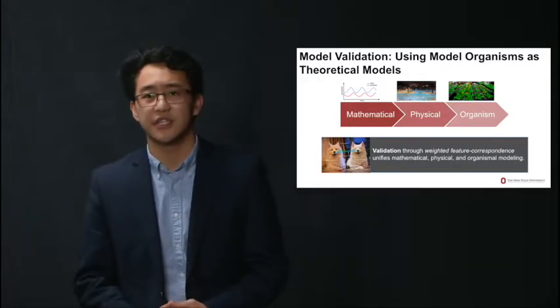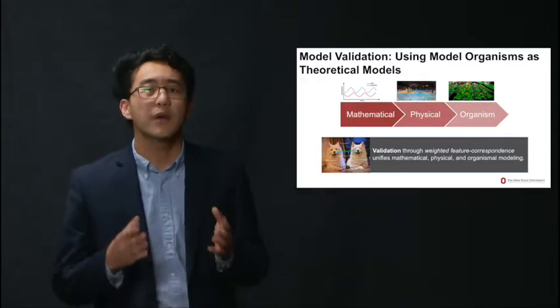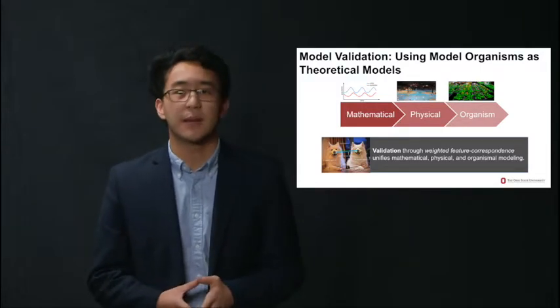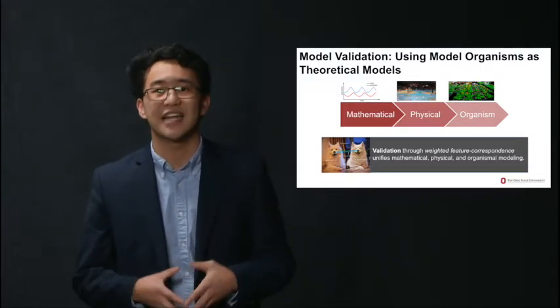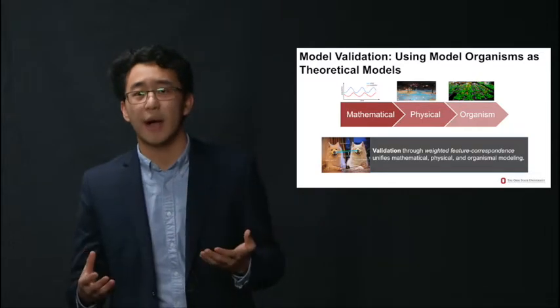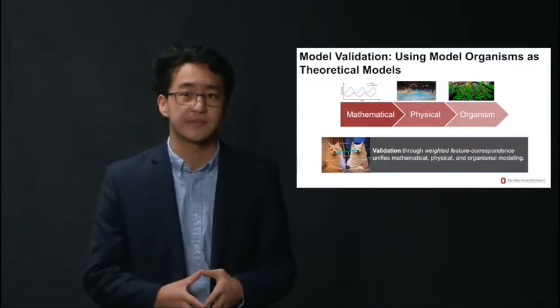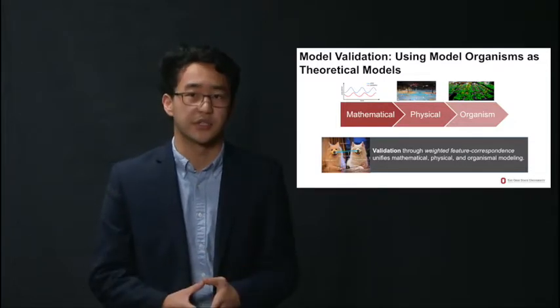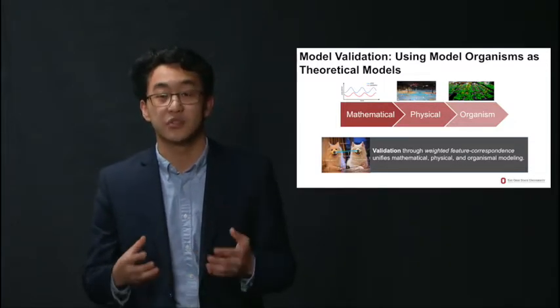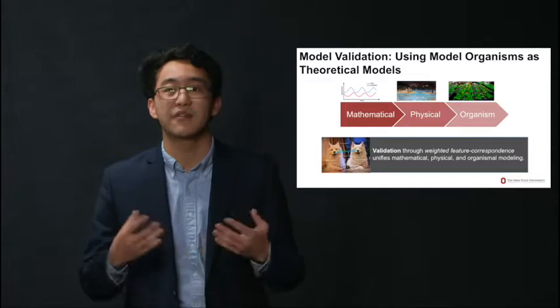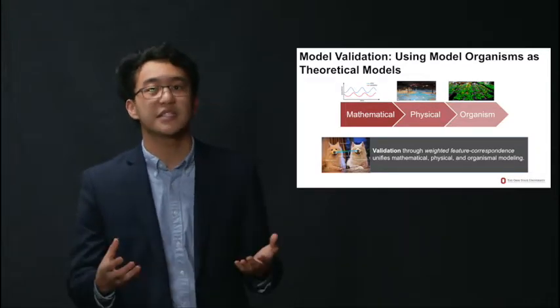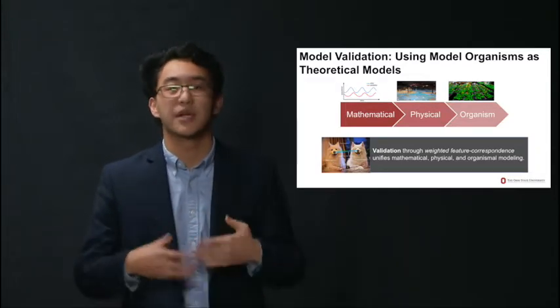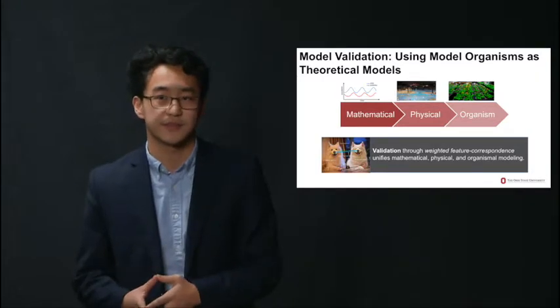But how is model validation done? One prominent approach claims that model validation consists in a kind of similarity relation. That is, models work by being similar to their targets. However, this is intuitive but faces a philosophical challenge. Model validation through the similarity relationship might be fundamentally ambiguous. Two things might be similar in one respect, but incredibly different in another respect.